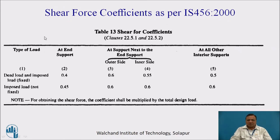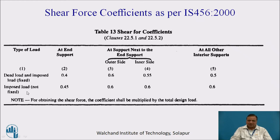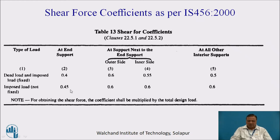This is Table 13 — shear force coefficients as per IS-456-2000. The type of load is given in the first column: dead load or imposed fixed load (such as floor finish), and live load (moving load) are taken separately. At end supports, the coefficient is 0.4 for dead load and 0.45 for live load.